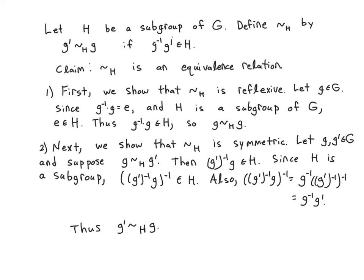How do you show something is an equivalence relation? First, you show it's reflexive — every element is related to itself, so G must be related to G, meaning G inverse times G is in H. Since G inverse G is the identity element, and H is a subgroup, the identity is in H. Thus this product is in H, and by definition of our relation, G is related to itself.